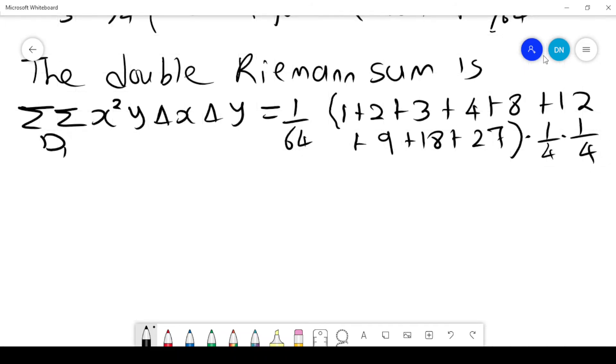So this takes us 1 over 64. The sum inside here is 1 plus 2 plus 3 is 6 plus 4 is 10, 18 plus 12 is 30, plus 39, plus 18, that is 40, that is 57. 57 plus this is 84. So we have 84 times 1 over 16. So it is 84 over 64 times 16.